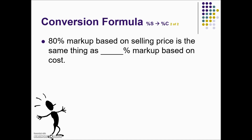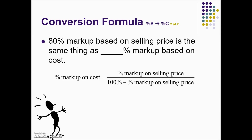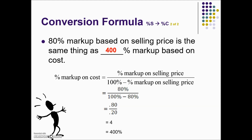Another problem here: converting from a percent markup based on selling price to an equivalent percent markup based on cost. We will use the converting markup percent on selling price to markup percent on cost formula. We have a markup of 80% based on selling price — that'll go in the numerator over 100 minus that 80% in the denominator. 100% minus 80% simplified gives us 0.20. Taking 0.8 divided by 0.2 gives us 4, and we need to convert this into a percent — so an 80% markup based on selling price is equivalent to a 400% markup based on cost.